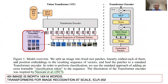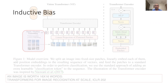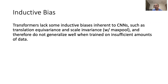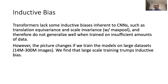This is the encoder-only transformer used in a Vision Transformer, or ViT. In this case, the output class is predicted from the classification token feature at the end of the encoder. The class token feature is the input to an MLP head, which is used for the image classification task. Transformers lack some inductive biases inherent to CNNs, such as translation equivariance and scale invariance, and therefore do not generalize well when trained on insufficient data. However, the picture changes if we train on large datasets — large-scale training compensates for the lack of inductive bias.